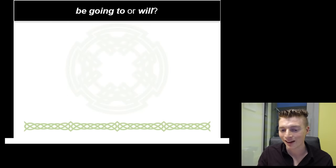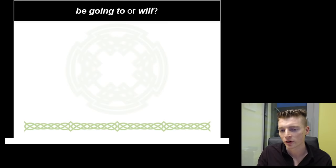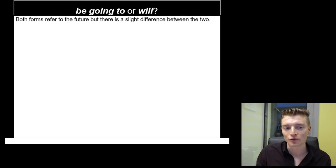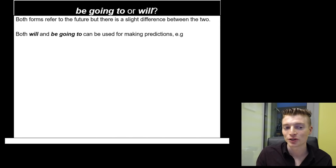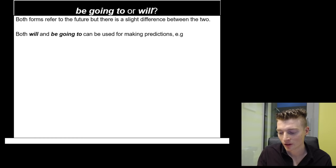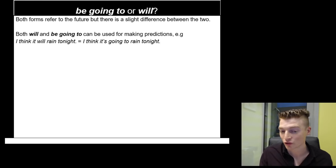Now one area that can be a little bit confusing for non-native English speakers is the difference between be going to and will. So let's explore this in a little bit more detail. Both these forms refer to the future, but there is a slight difference between the two. Both will and be going to can be used to make predictions. So 'I think it will rain tonight' is exactly the same as saying 'I think it's going to rain' — we've used two different structures but we're expressing the same meaning — we're making a prediction.